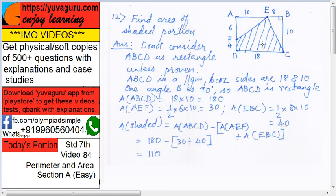We want shaded, so total minus these two triangles. So A shaded equals to ABCD minus AEF plus EBC, right? This is total minus the total of these two triangles. So 180 minus 30 plus 40, that is 70. So it becomes 110.